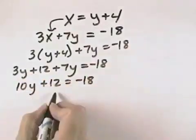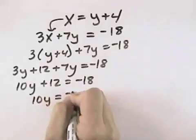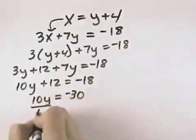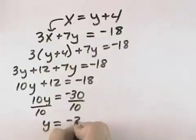Now getting y by itself, we can subtract 12 from both sides. So we have 10y equals negative 30. Then divide each side by 10, and we can see that y will equal negative 3.